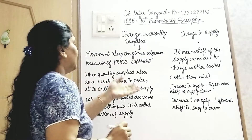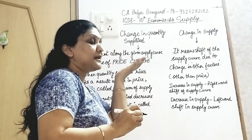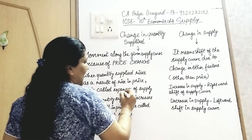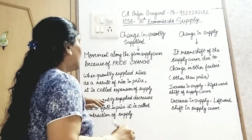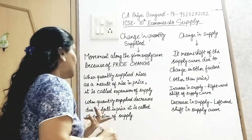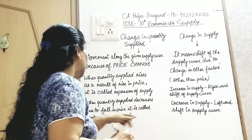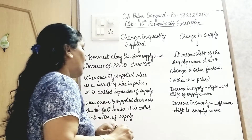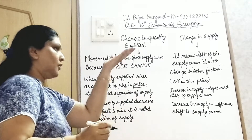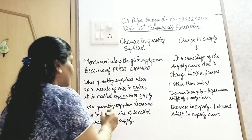When quantity supplied rises as a result of a rise in price — price increase hui, price badi, toh supply bhi badi — that is called expansion of supply. When quantity supplied decreases due to a fall in price, it is called contraction of supply. So the keyword here: rise in price leads to expansion of supply, and fall in price leads to contraction of supply.